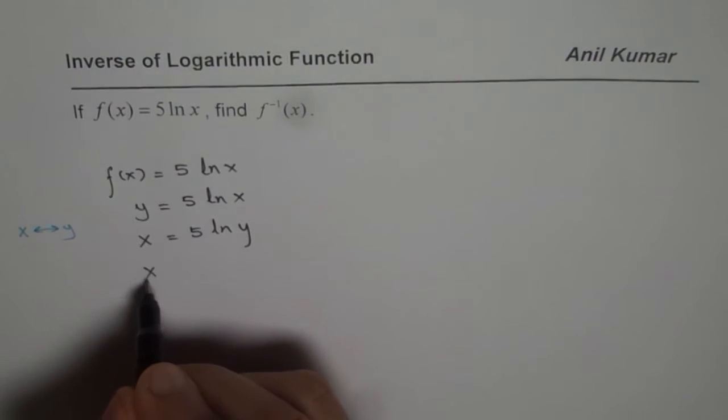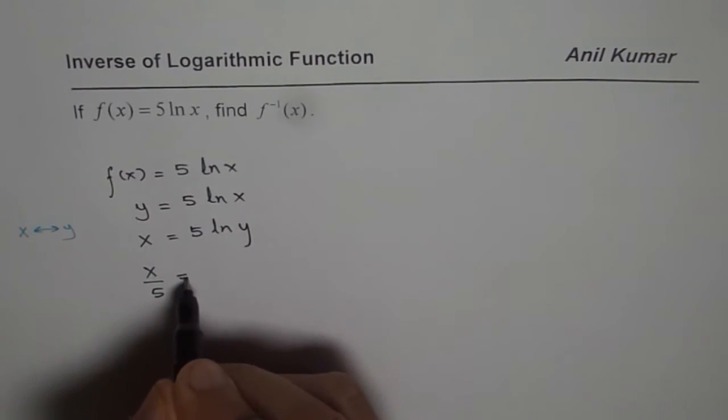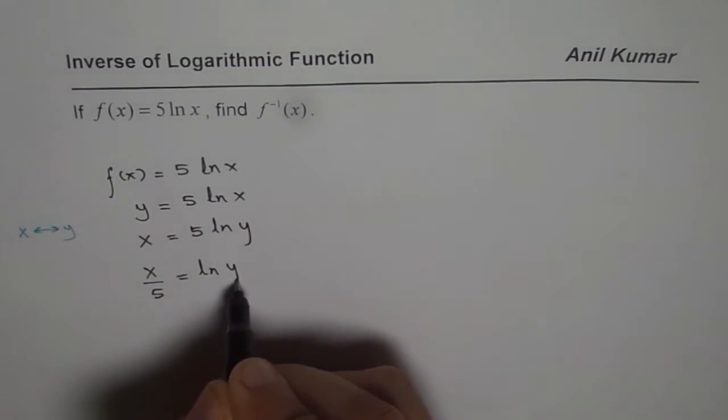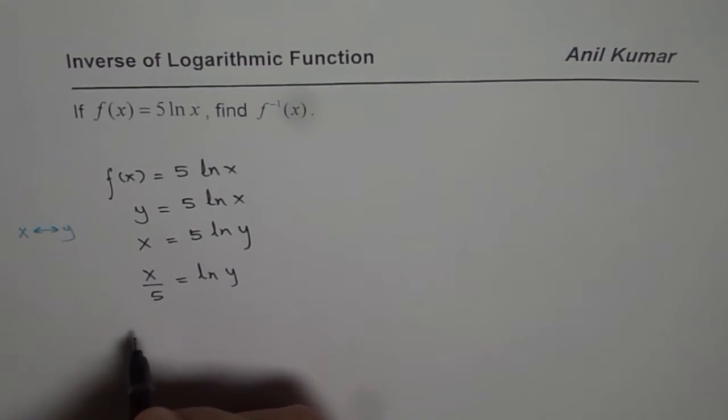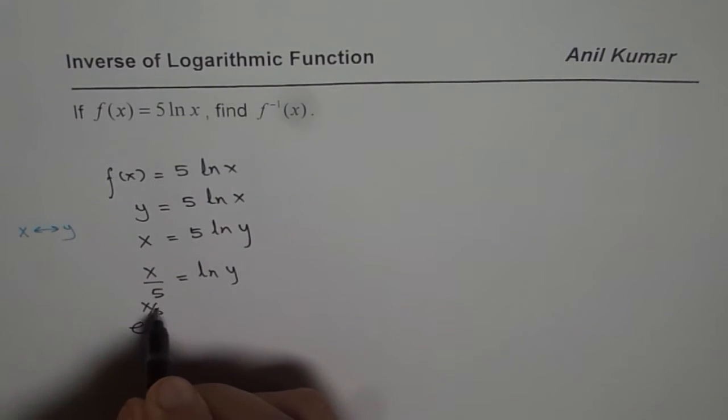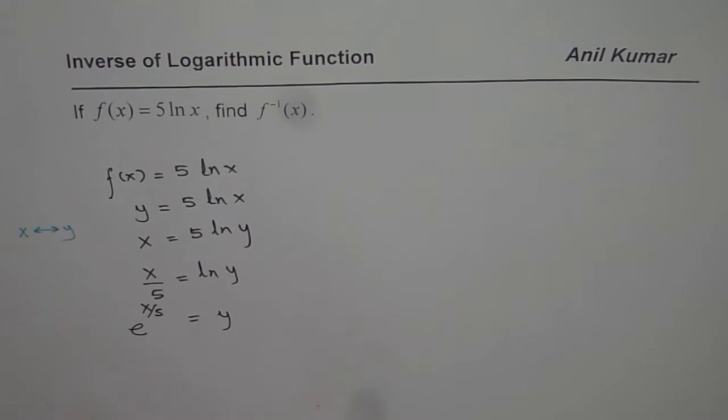First step is divide by 5, so we get x divided by 5 equals to ln y. To get y, we should have e to the power of x over 5 equals to y.